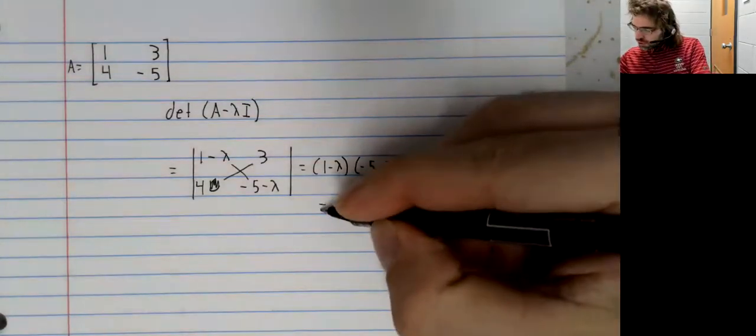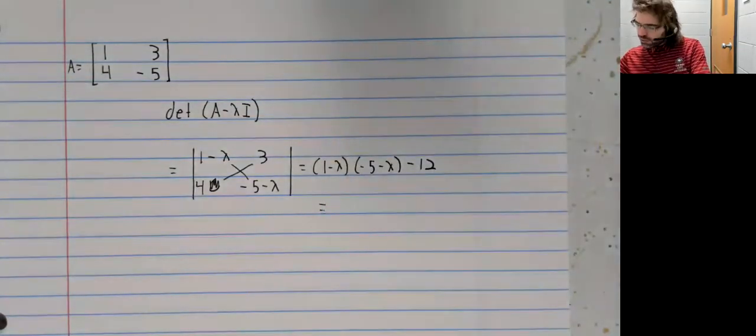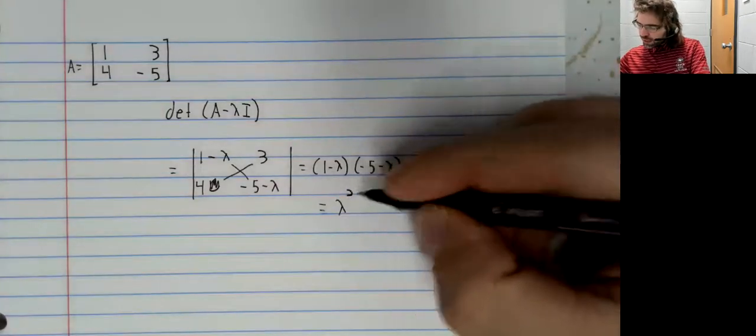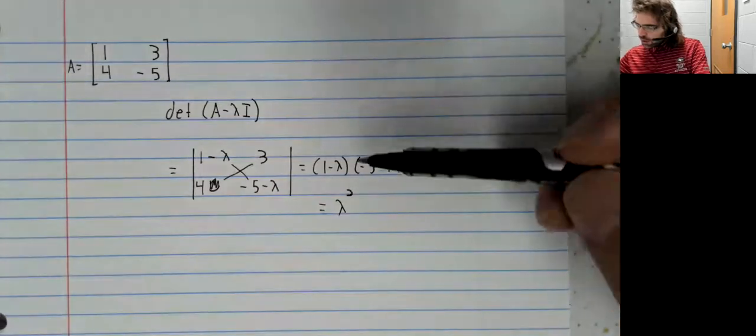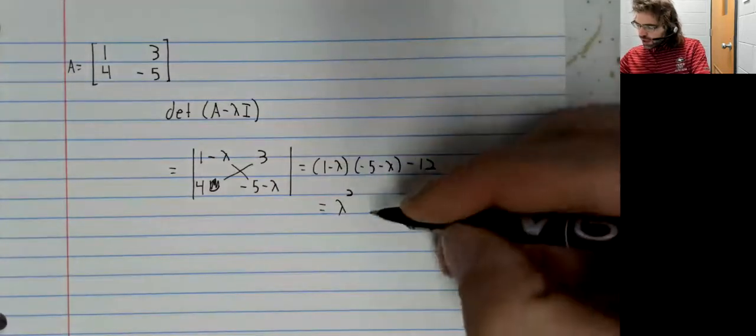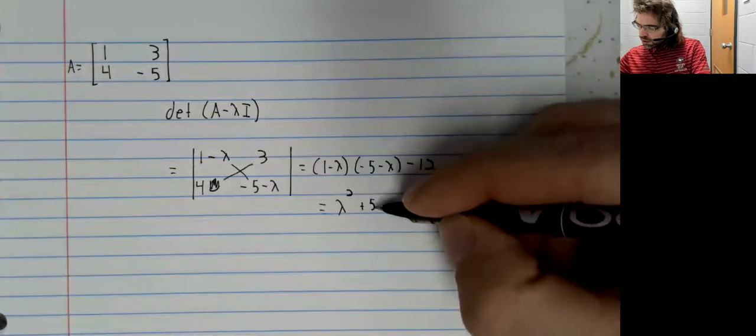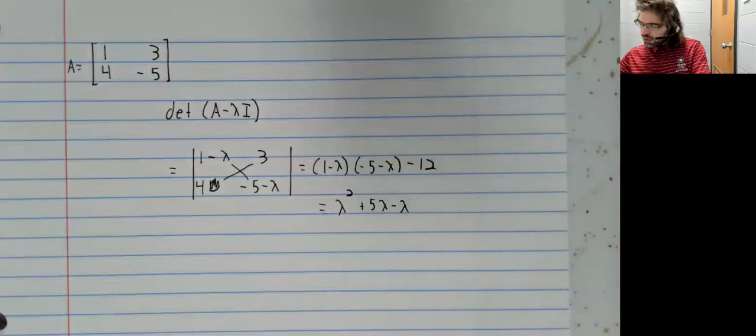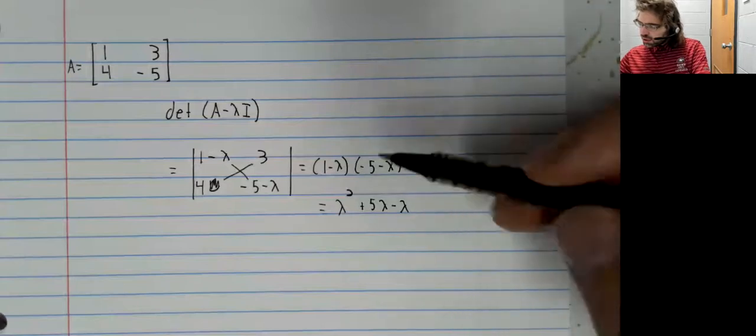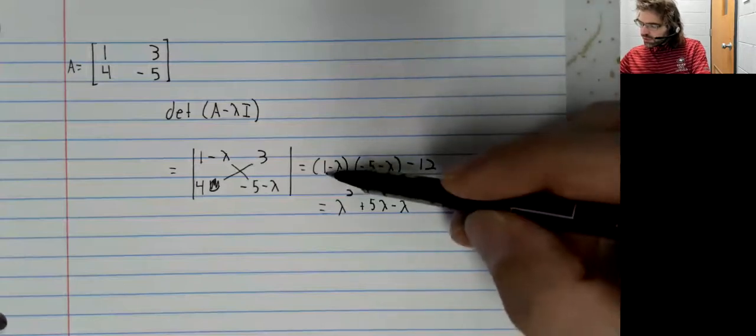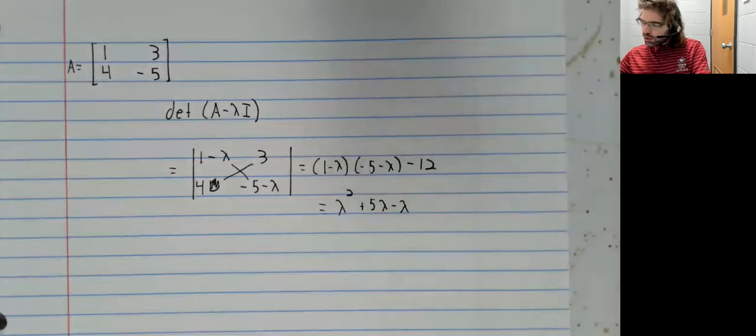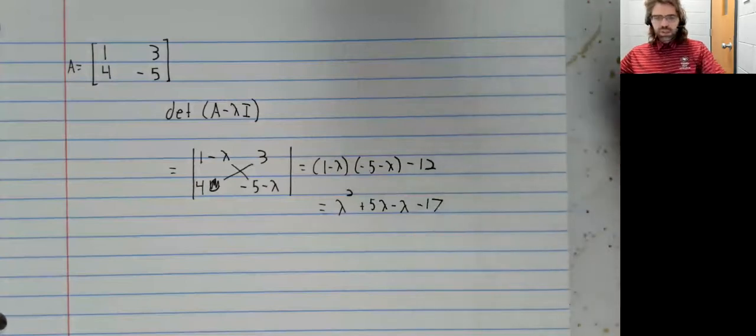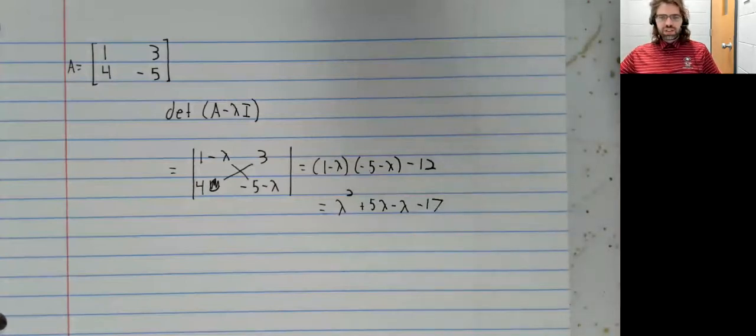So let's see if we can do this right. Positive lambda squared, 5 lambda, negative lambda, negative 5 times 1, negative 5 minus 12, negative 17.